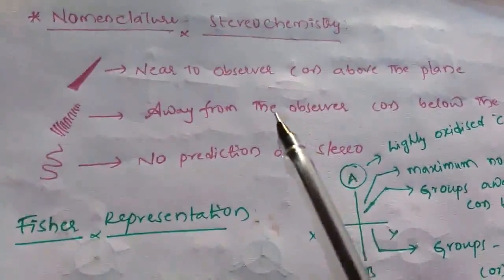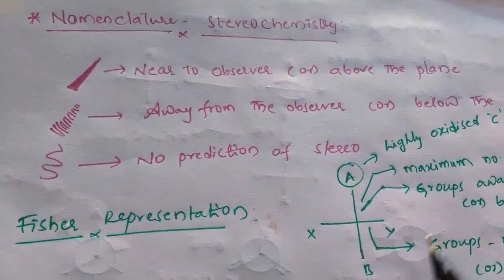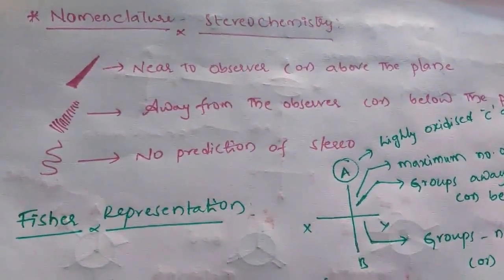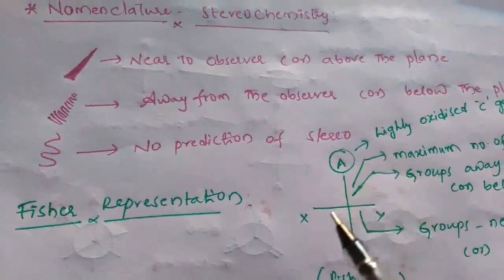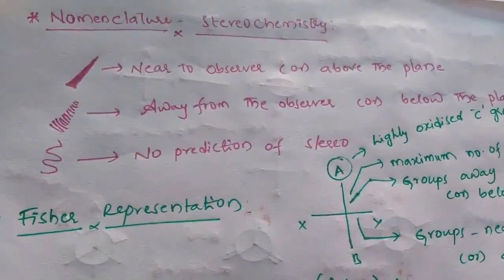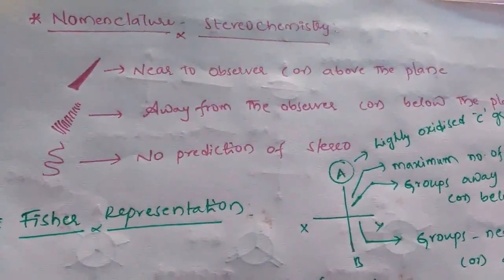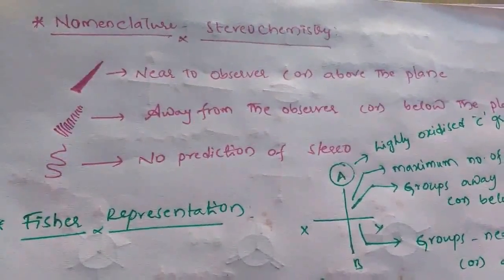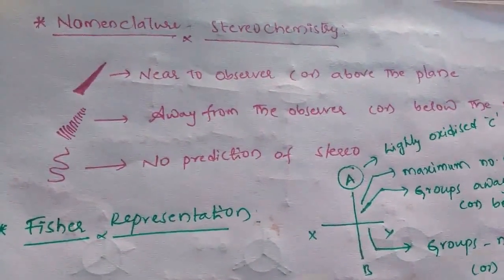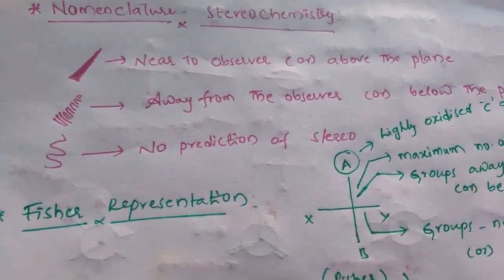To solve the stereochemistry part, one must have 3D imagination power — that means the ability to view a given structure on paper in 3D form. Then there is a much greater chance to solve stereochemical problems with ease.